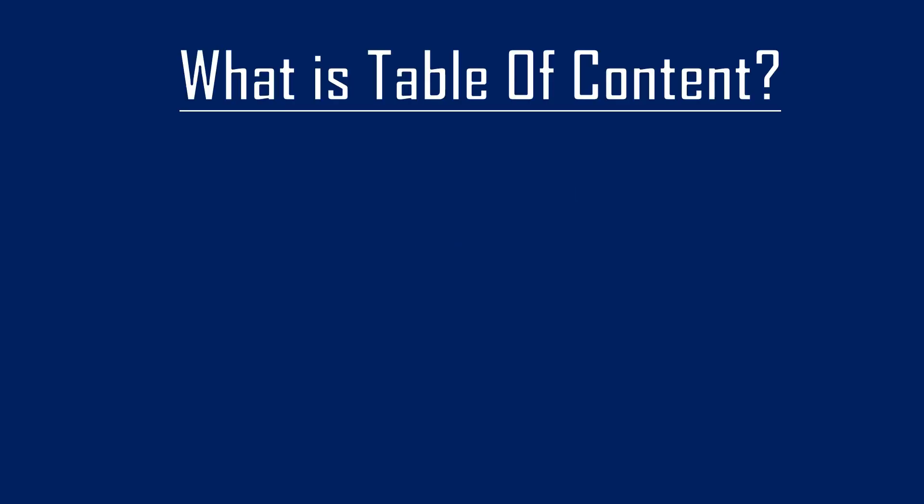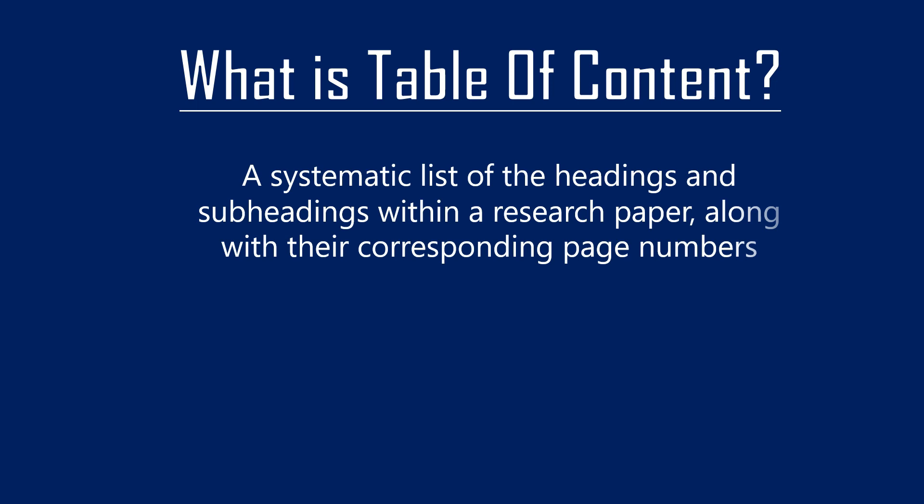What is a table of contents? A table of contents is a systematic list of the headings and subheadings within a research paper, along with their corresponding page numbers.